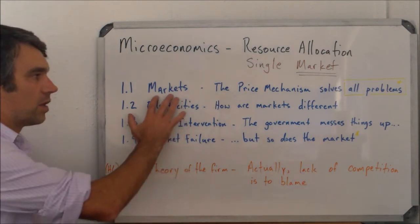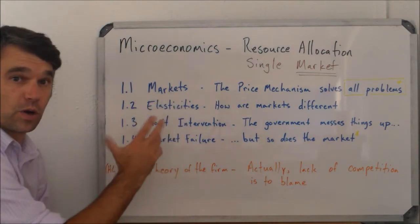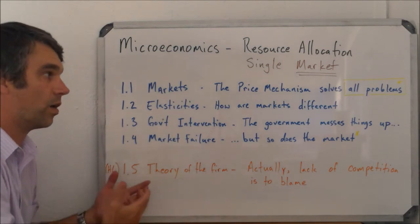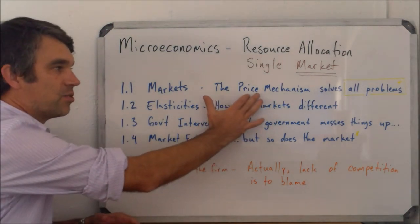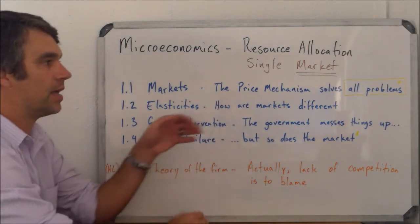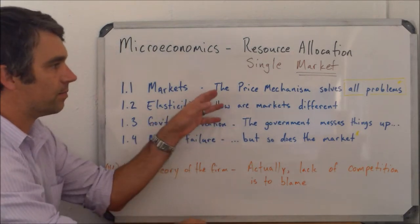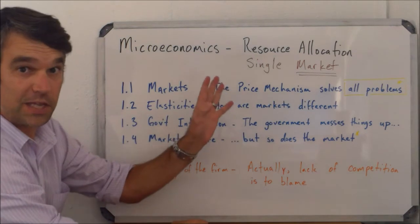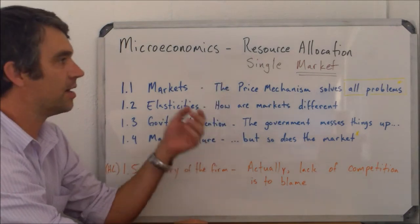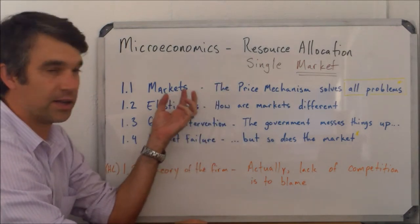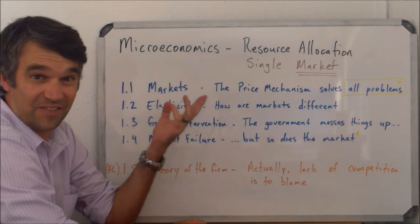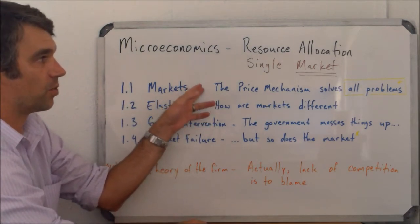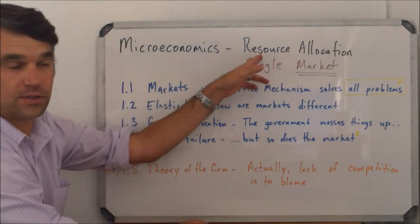First off, we look at the basics of markets — how markets work and how interaction inside of the market works to set a price. That's what we call the pricing mechanism. My explanation that the price mechanism solves all problems comes with a major asterisk, but we do start with this fundamental understanding that if left to its own devices, the market will figure out the best way to allocate resources.